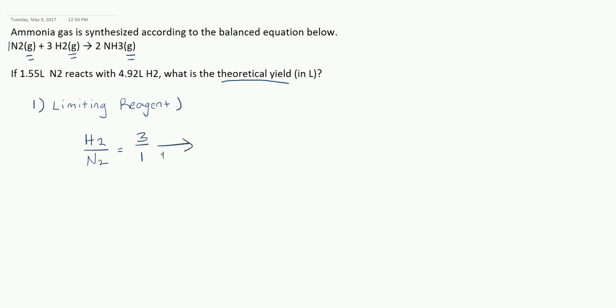So what I'm going to do is run a little test here. I'm going to put 4.92 liters in the H2 spot and 1.55 liters in the nitrogen spot and see what this ratio actually is. If I do this, what I'm going to get is 3.17, or more specifically 3.17 over 1.